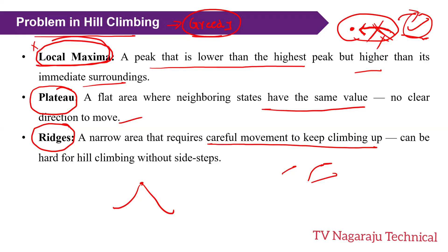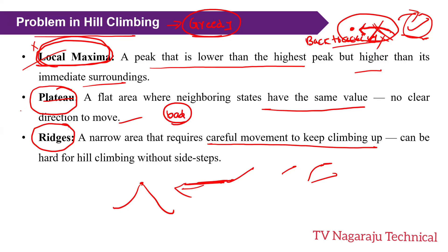Solutions: to avoid local maximum, we use backtracking — backtrack to the parent and try another improvement — or restart the process multiple times. For plateaus, sometimes we need to accept bad moves: blindly move in a direction, and if we get a better solution fine, otherwise go back. For ridges, allow moving equally to good neighbors.